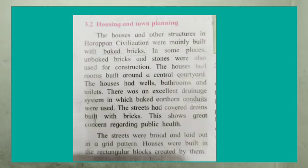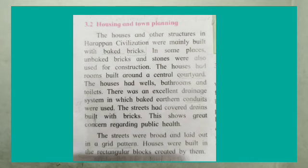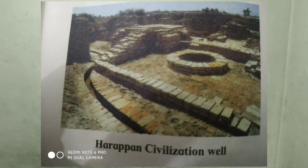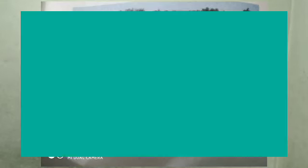The streets were broad and laid out in a grid pattern — meaning rectangles of equal size. Houses were built in the rectangular blocks created by those streets. The towns were divided into two or more sections, and each section had separate fortification. Fortification means strength and defense against an enemy. You can see a picture of Harappan civilization to get a clear idea of what type of construction was there.